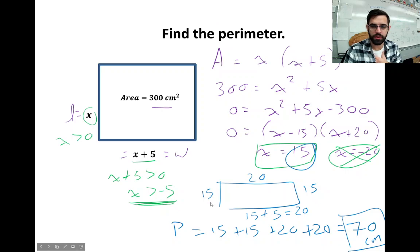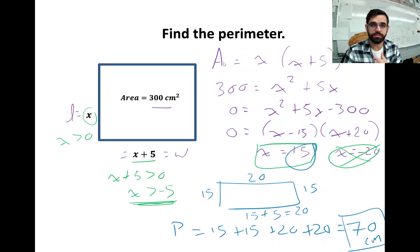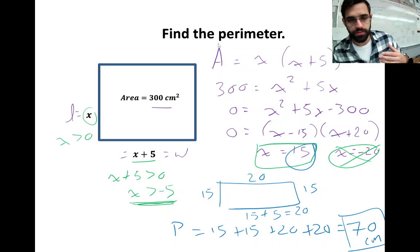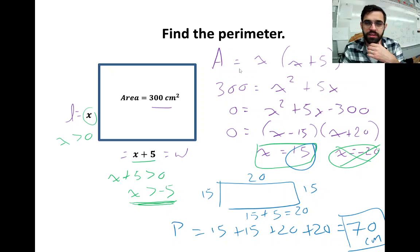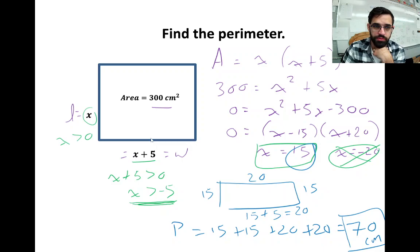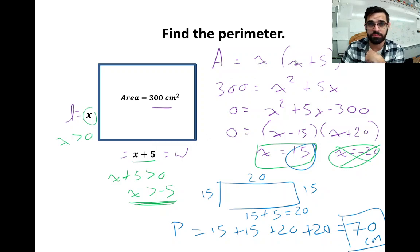The perimeter would be x + (x + 5) + x + (x + 5) all the way around. But because we're given the area, we can solve for x: 300 = x(x + 5), which gives us x² + 5x.